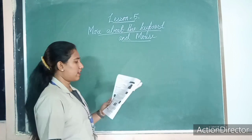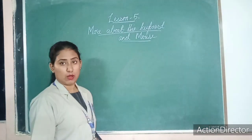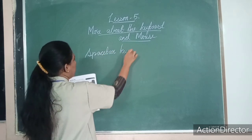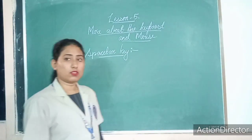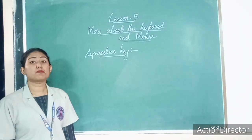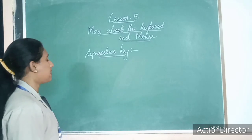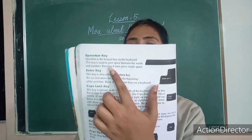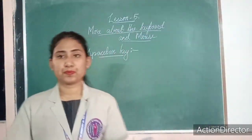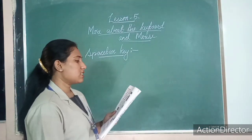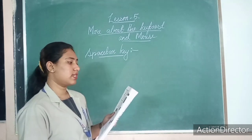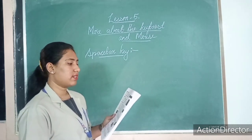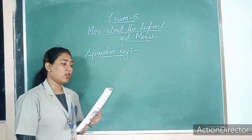Lesson five is 'More about the Keyboard and Mouse.' The first topic we are going to study is the spacebar key. The spacebar key is also called a special key. Please turn to page number 28. The spacebar is the longest key on the keyboard. This key is used to give space between words and numbers. Pressing it once gives a single space.